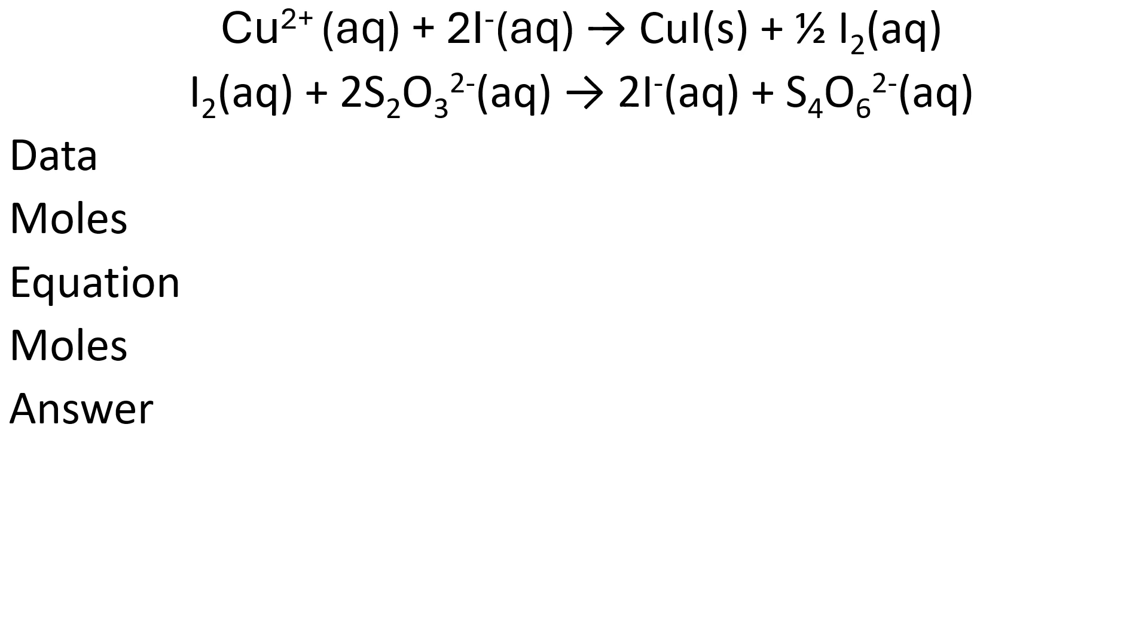You need to think about what information you have to work out the moles. The data we have is for the thiosulfate, so the number of moles is V times C: that's 29.8 divided by 1000 to turn it into dm³, then multiply by the concentration. That gives us 0.00298 moles.